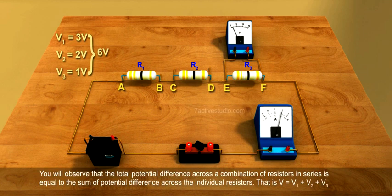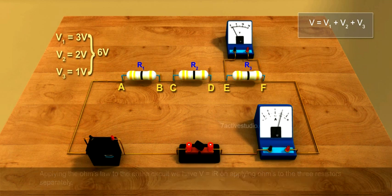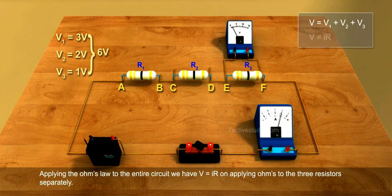You will observe that the total potential difference across a combination of resistors in series is equal to the sum of potential difference across the individual resistors. That is, V equals V1 plus V2 plus V3. Applying Ohm's law to the entire circuit, we have V